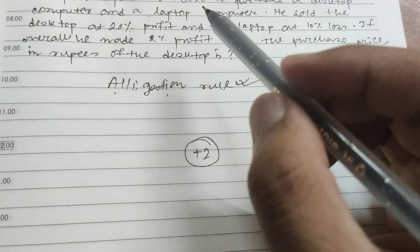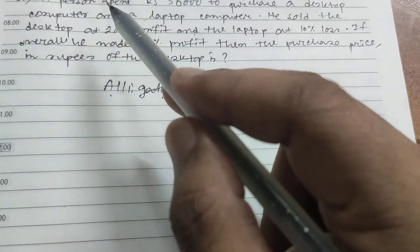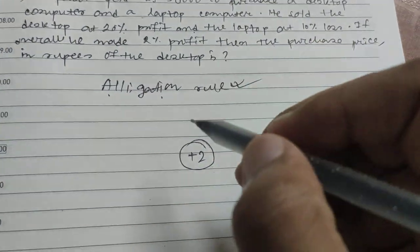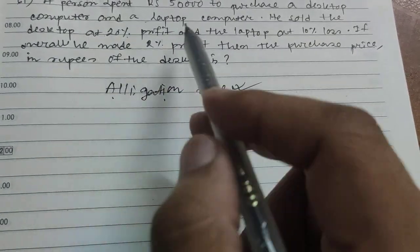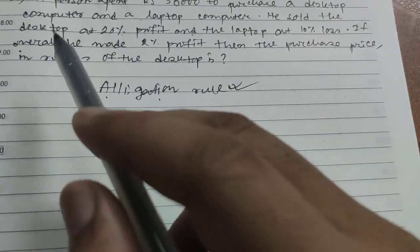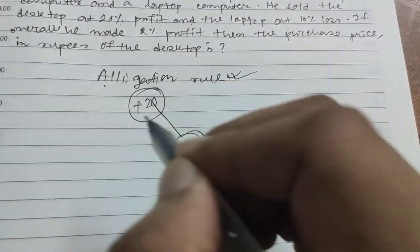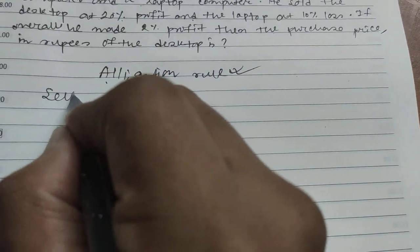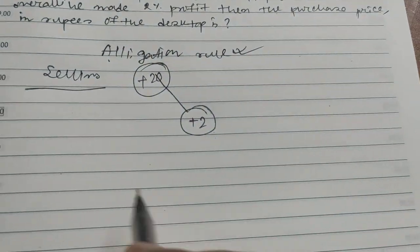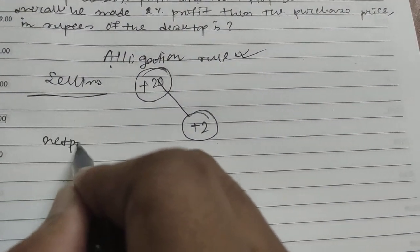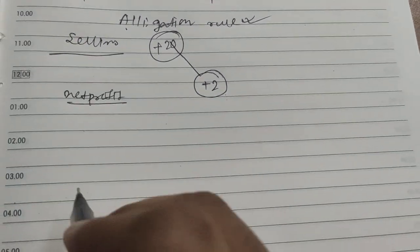He spent rupees 50,000 to purchase a desktop and laptop. The desktop was sold at 20 percent profit, so plus 20 here for the selling. This represents the net profit, and here we will keep the cost price.